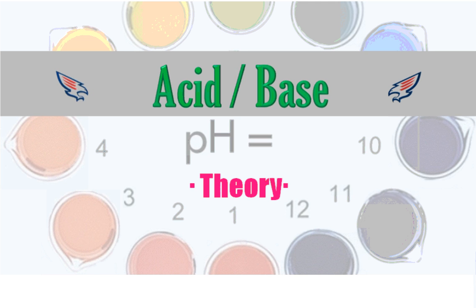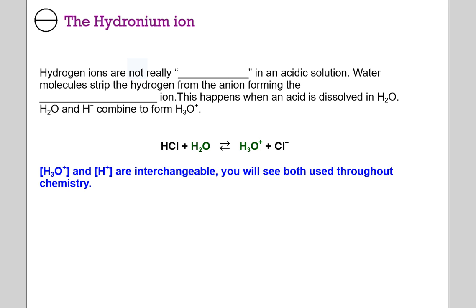Hello and welcome to Video 4: Acid-Base Theory and some additional concepts. I want to review the idea of the hydronium ion. Hydrogen ions are not really free in an acidic solution. Water molecules strip the hydrogen from the anion, forming the hydronium ion. This is what happens when an acid is dissolved in water — the water molecules are attracted to the hydrogen ion and grab on.